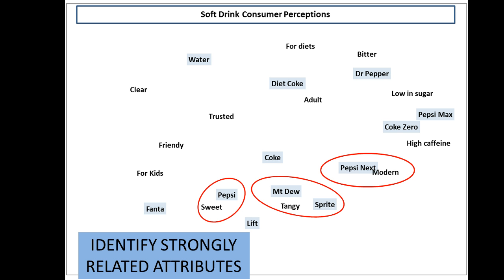Then we can look at attributes that are only associated with one particular brand, where they sort of own that particular dimension in the consumers' minds. In this case, Pepsi, Next and Modern because it is fairly new, Pepsi and Sweet, etc. — they are basically owned only by that brand and become a clear point of differentiation.